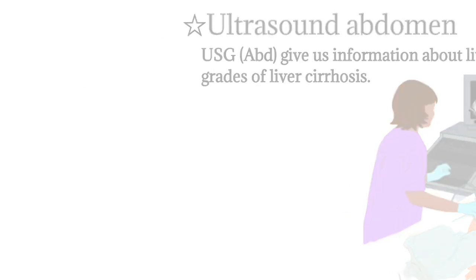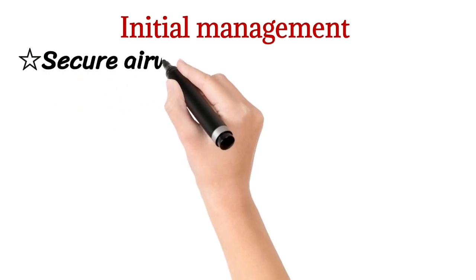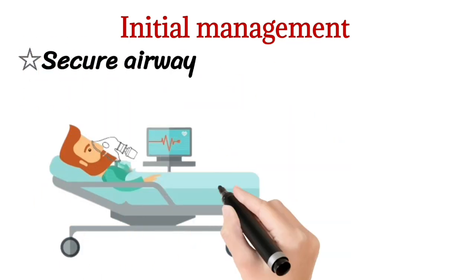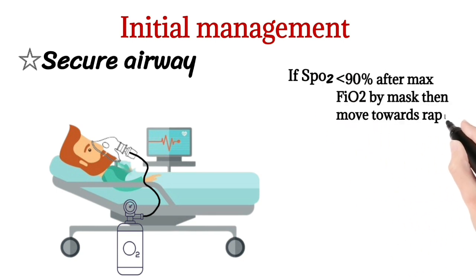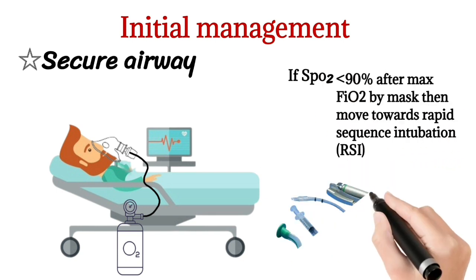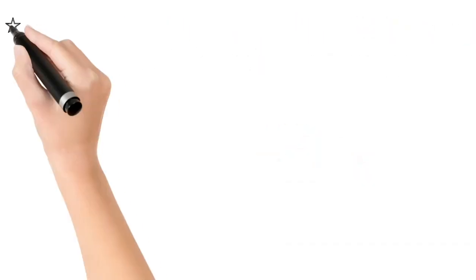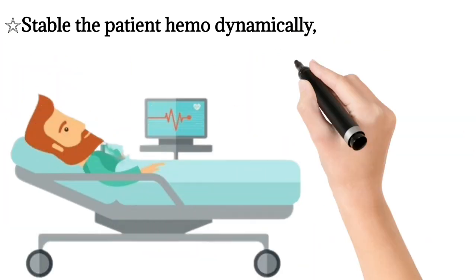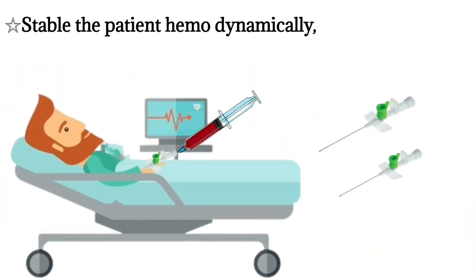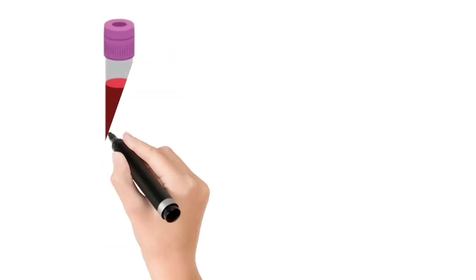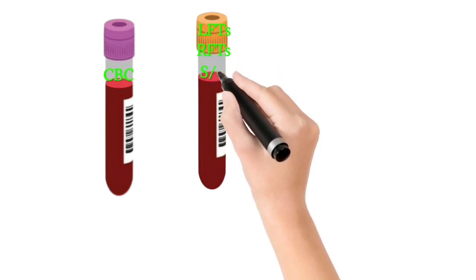In initial management, first secure the airway. If SpO2 is less than 90% after maximum FiO2 by mask, proceed to rapid sequence intubation. Then stabilize the patient hemodynamically by placing double IV lines and drawing blood samples to send to the lab for CBC, LFTs, RFTs, and coagulation studies.